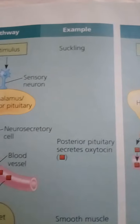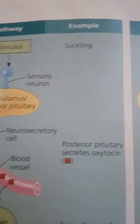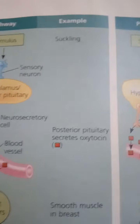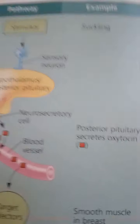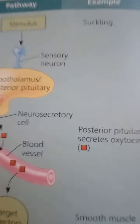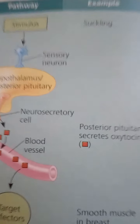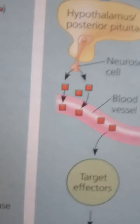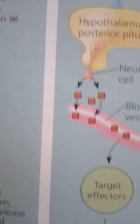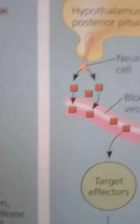Other chemical signals called local regulators transmit information to target cells near the secreting cells. Still other chemical signals called pheromones carry messages between different individuals of a species, such as in mate attraction. We will concentrate on hormones and neurohormones that are not directly involved in reproduction.